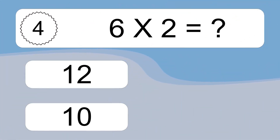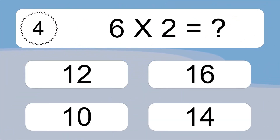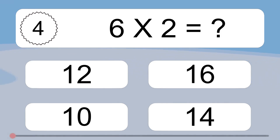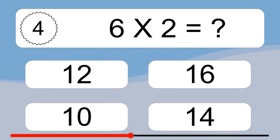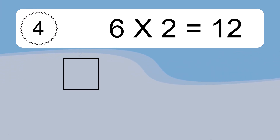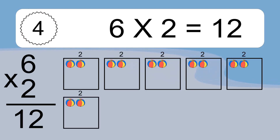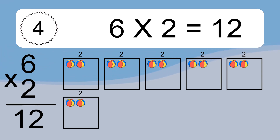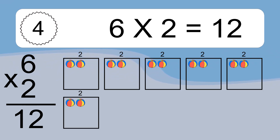Six times two equals what? Six times two equals 12. We have six boxes and each box has two colorful balls inside. If you count all the balls in all the boxes together, you will have six times two balls. This equals 12 balls.